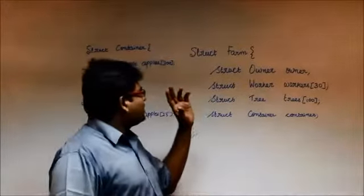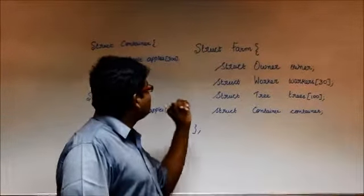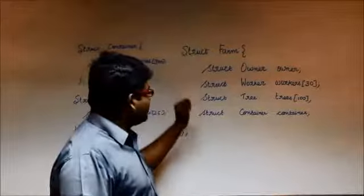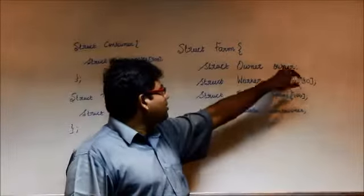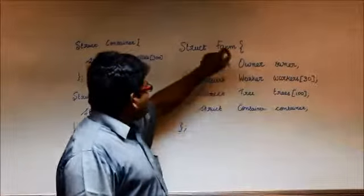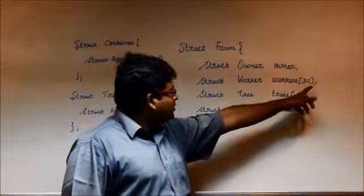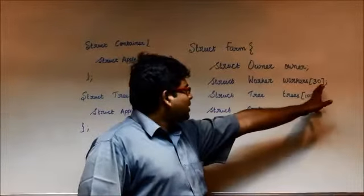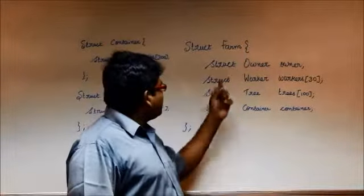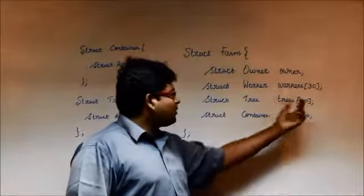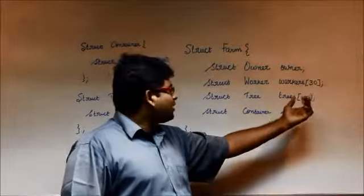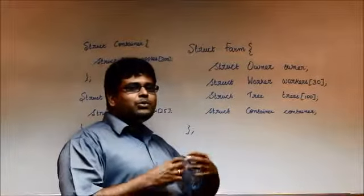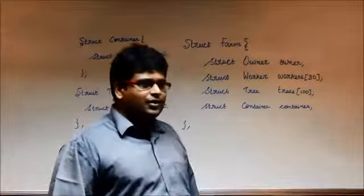Let's see an example of how we can come up with a structure for a farm. A farm will have a collection of entities. The farm will have an owner — each farm will have only one owner. A farm will have a set of workers; for this puzzle we have taken the number of workers to be 30. The farm will have a collection of trees — we have assumed there are around 100 trees in the farm. And each farm will have a container where we collect all the apples from the tree and put them in the common container, then send them to different destinations.